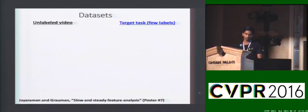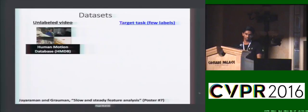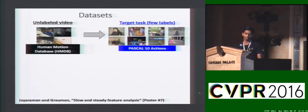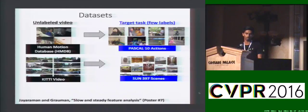To test whether our representations are any good, we first learn these representations on unlabeled video and test them on target recognition tasks with minimal supervision. For instance, we could learn representations on human motion dataset videos and then try to predict actions from static images. Or you could learn representations from car-mounted camera videos and try to recognize scenes in static images, and so on.